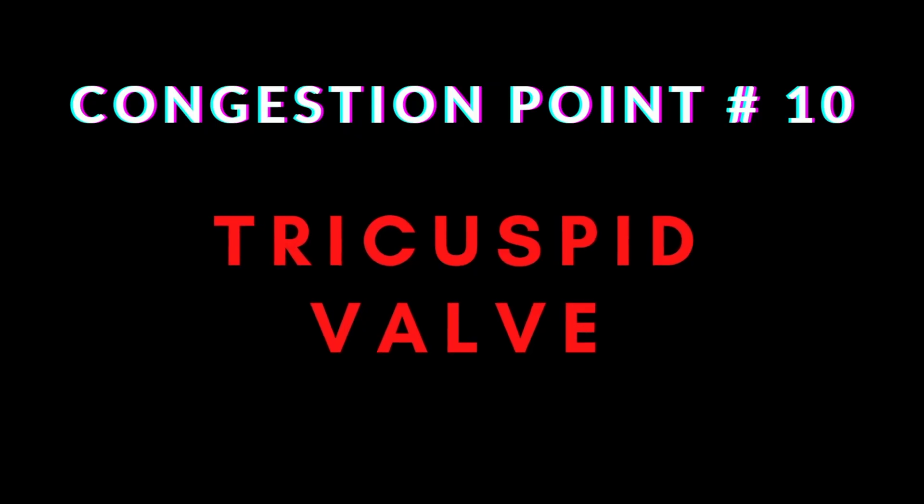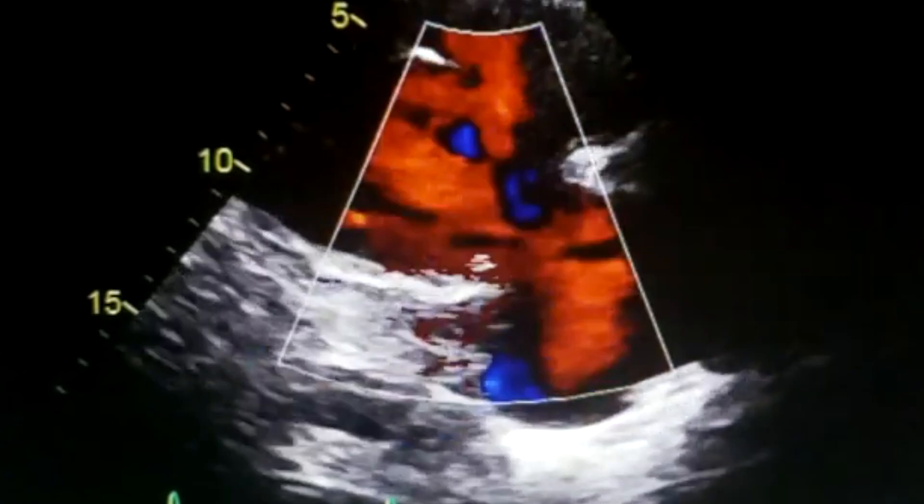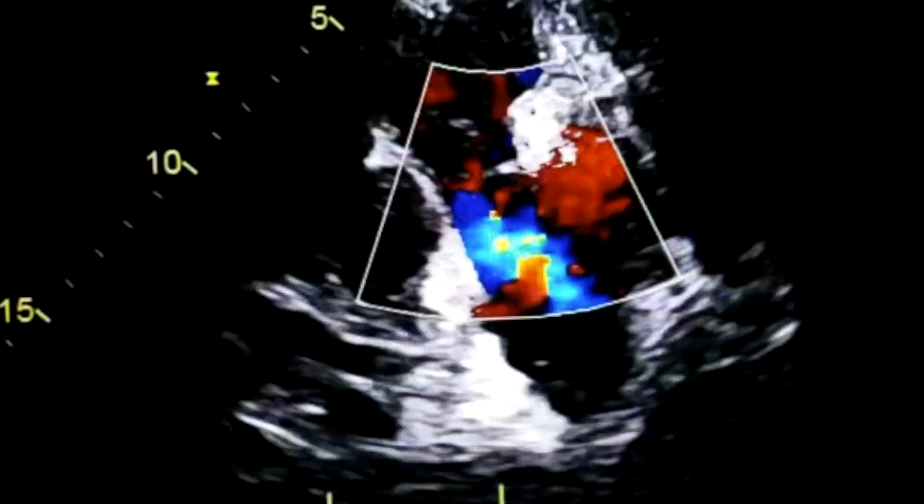Next is the tricuspid valve. Like any cardiac valve, it needs close interrogation. You're looking for severe tricuspid regurgitation and possibly infective endocarditis. By estimating gradients using Doppler, you can estimate pulmonary pressures. Color Doppler helps define the regurgitant jet, and continuous wave Doppler allows gradient estimation.